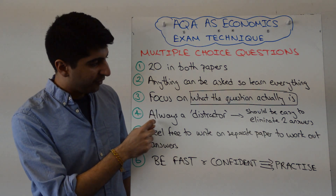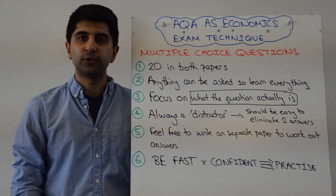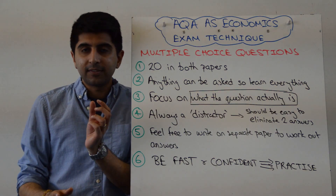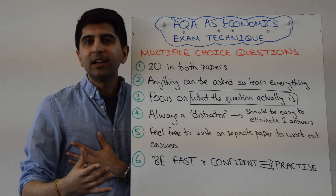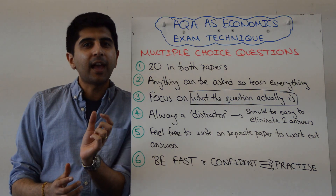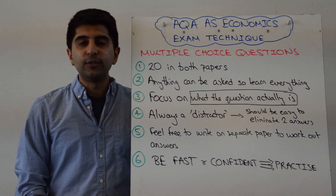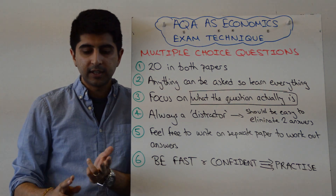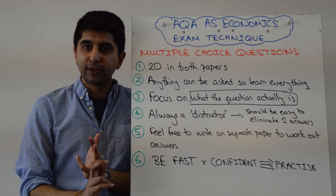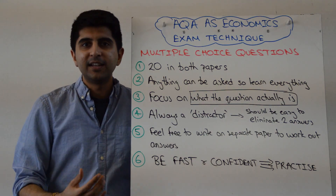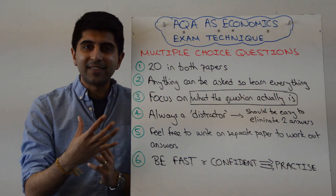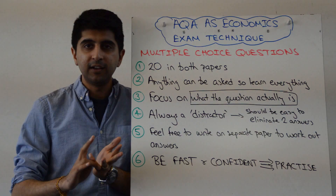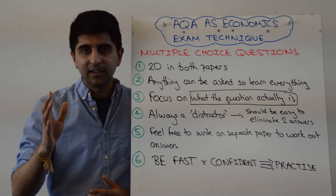Number four — there is always a distractor. This is great for your technique on these multiple choice questions. The examiners always write one answer as a distractor. It's wrong, but it's there to distract you and coax you into maybe circling it as the correct answer. It's there to test whether you understand your economics. Two answers are always simply wrong — you can discount those. And one is there to coax you. If you know your stuff, you shouldn't be distracted by it. Don't get confused into thinking the distractor is the correct answer.